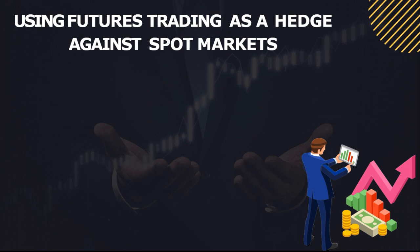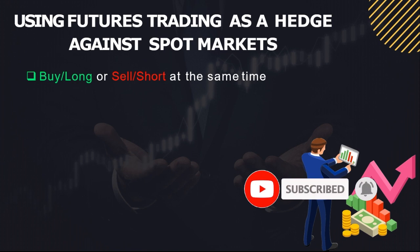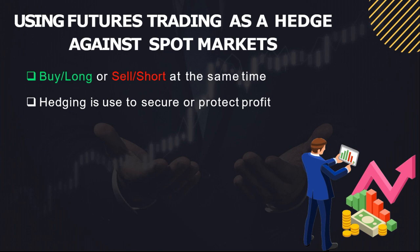By default, the Binance futures trading account is set to one-way trading mode, but I'll show you how to change it from one-way mode to hedge mode. With hedge mode on the Binance exchange, you can buy long or sell short the market at the same time — you can open a long position and a short position simultaneously. The reasons for doing this are: you can use hedging to secure or protect profit, and you can use it to make short-term massive gains from the futures market.